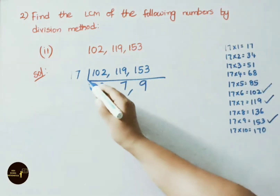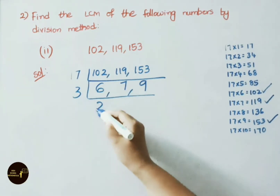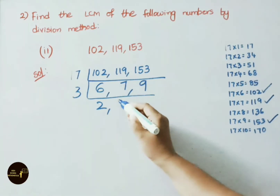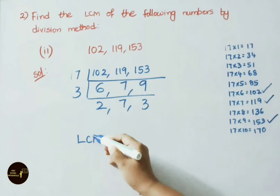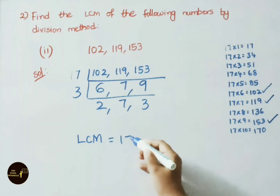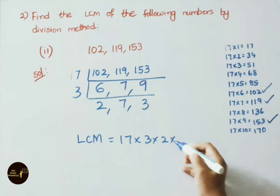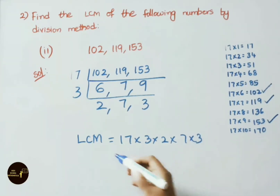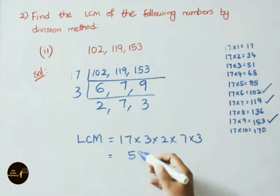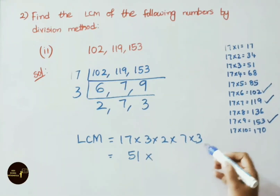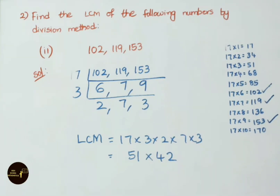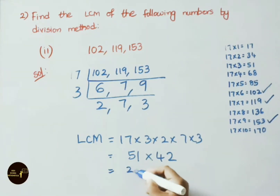Now divide by 3: 3 × 2 = 6, 7 is not present so write as it is, 3 × 3 = 9. LCM = 17 × 3 × 2 × 7 × 3. That is: 17 × 3 = 51, 51 × 2 = 102, 7 × 3 = 21, then multiply these two values. We get the answer 2142.